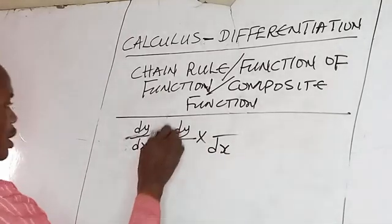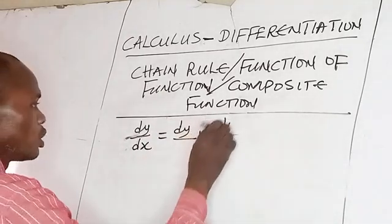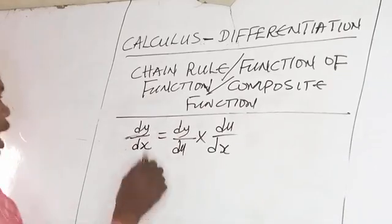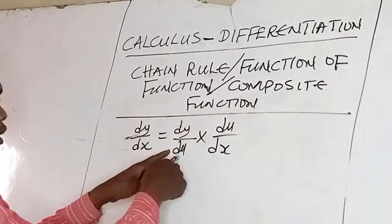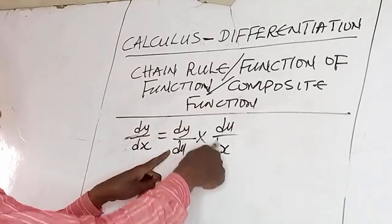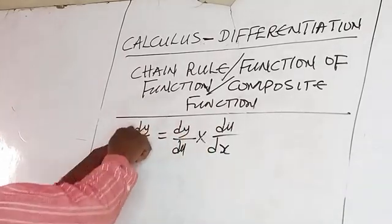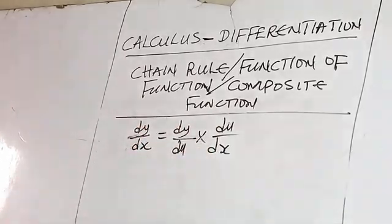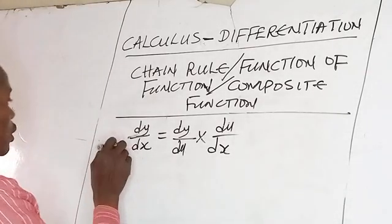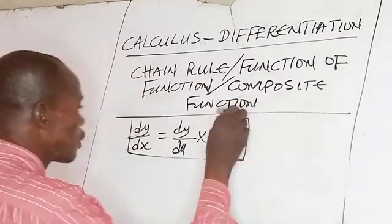Now introduce du, so that means dy/dx equals dy/du times du/dx. If du cancels du, that means dy/dx equals dy/dx. So this is the formula for function of function.